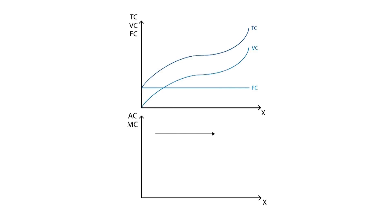When output increases, the average fixed cost will decrease, since dividing a fixed cost into a greater number of output units makes it smaller.